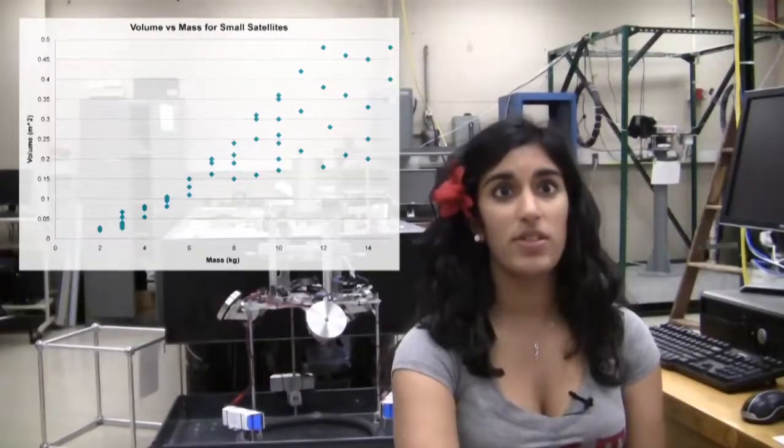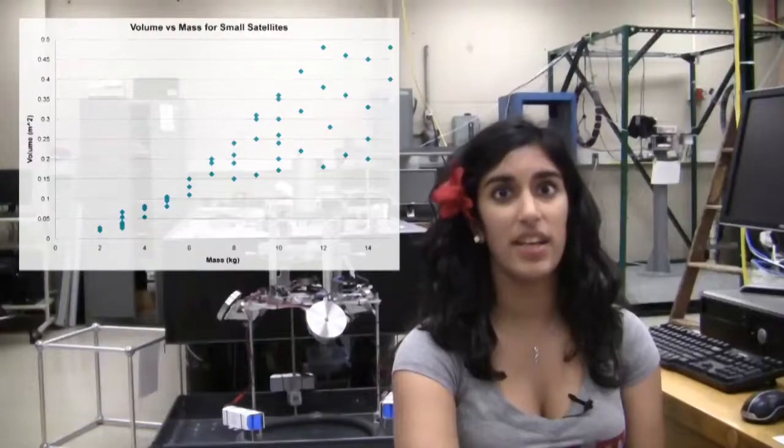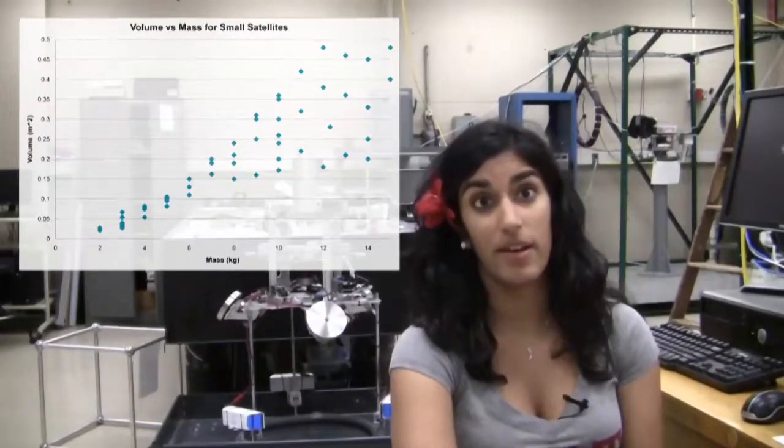Another good type of graph for visualizing how the changing of one variable can affect another is a scatterplot. Scatterplots are especially good when one value of a variable can have multiple values of another. Consider beginning to design a small satellite, like we do here in the Space Systems Lab. You might be interested in looking at how the volume of a satellite is related to its mass and vice versa.